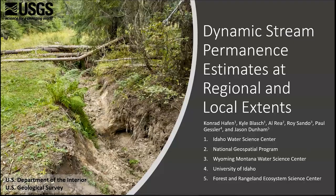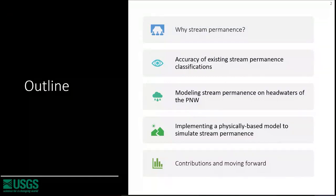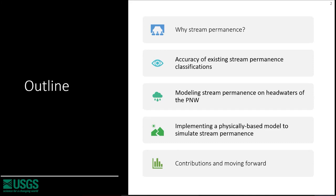I worked on stream permanence and stream permanence modeling for my dissertation. I'm considering stream permanence and dynamic stream permanence estimates at both regional and local extents. I'll give a quick overview: first I'll talk about the importance of stream permanence, then go into three case studies — the accuracy of existing NHD stream permanence classifications, modeling stream permanence on headwater streams in the Pacific Northwest, and implementing a physically based model at a more local scale.